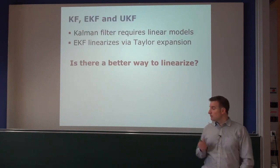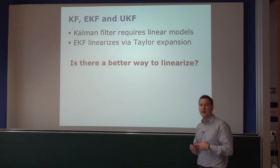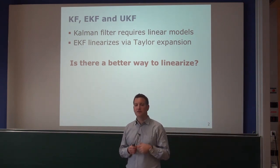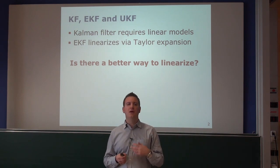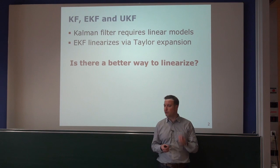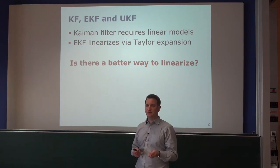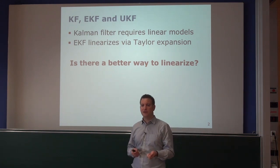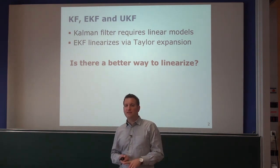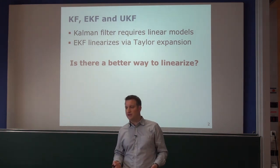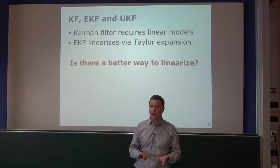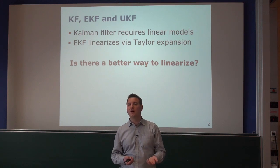To summarize: the Kalman filter requires exactly linear models. Otherwise, the distribution we obtain would not be a Gaussian anymore after an update or measurement step. Therefore, it was essential to have linear functions. The problem is that most functions in reality are nonlinear, and therefore we had to find solutions for how to deal with nonlinear functions.